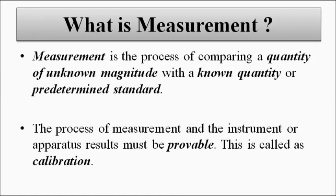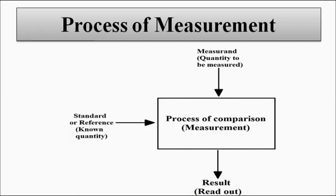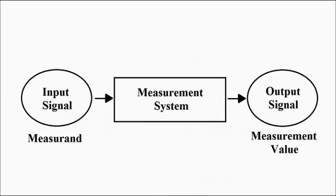So this is the basic process of measurement: the quantity to be measured — the measurand — is the unknown signal of interest. It is compared with the reference or the standard which is predetermined, and we get the result. The input signal goes into the measurement system and we get the output. Here we are representing it simply: we get the input, which is the unknown signal, the measurement system compares it with the reference, and we get the output.